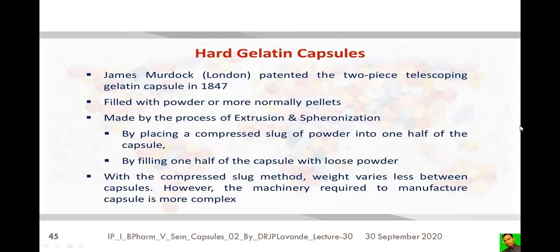Murdoch filled capsules with powder or pellets made by extrusion and spheronization. Nowadays, by placing a compressed slug of powder into one half of the capsule — for example, a slug in the body and loose powder in the cap — weight variation between capsules is reduced. However, the machinery required to manufacture capsules using this method is more complex.